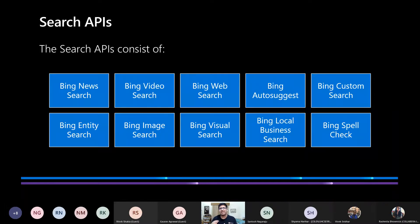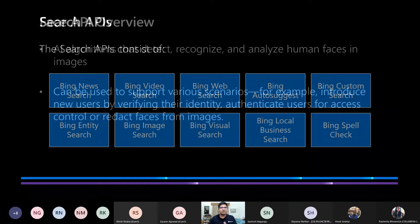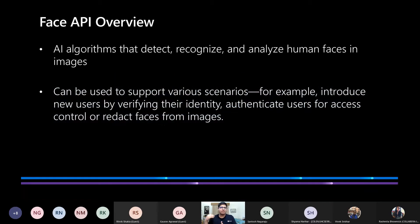Those are the five pillars of Cognitive Services. Now the Face API provides AI algorithms that detect, recognize, and analyze human faces in images, and it can be used to support a variety of scenarios — for example, onboarding new users by verifying their identity, authenticating users for access control, or redacting faces from certain images. A big customer story here is Uber, which uses the Face API for authentication and authorization of users on their platform worldwide.